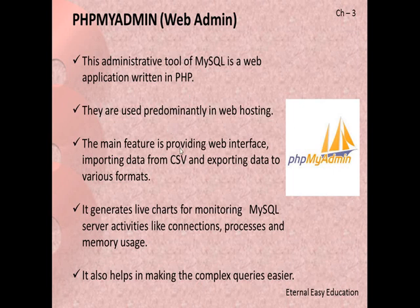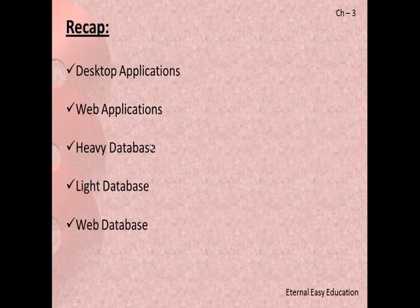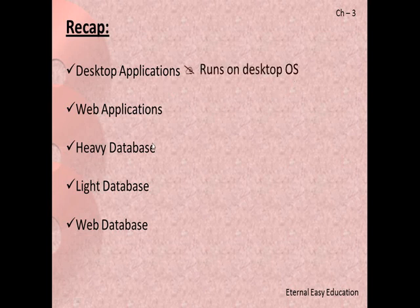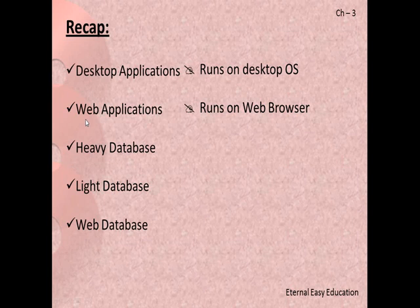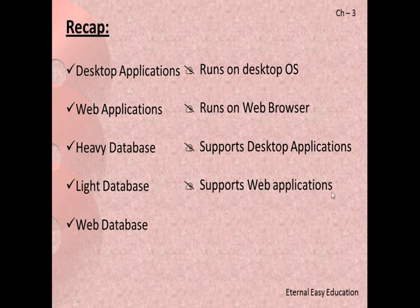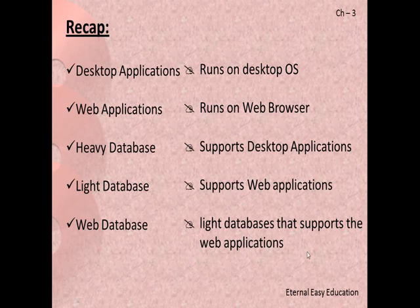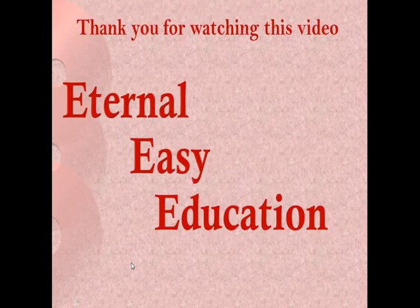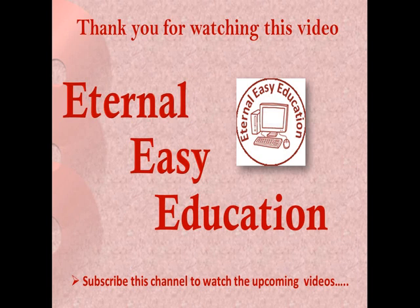Let's recap what we learned in this session. Desktop applications run on a desktop OS. Web applications run on a web browser — without the browser you cannot run web applications. A heavy database supports desktop applications. A light database supports web applications. A web database refers to light databases that support web applications. Thank you for watching this video. If you like it, please subscribe to this channel for upcoming videos. Have a good day!